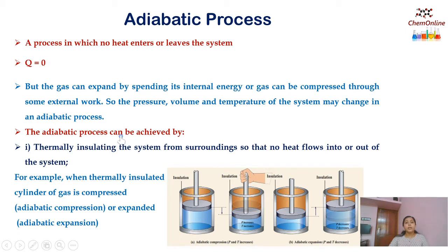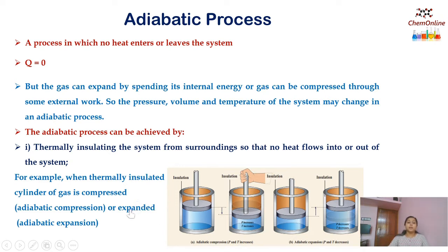We can achieve an adiabatic process by two conditions. The first way is by thermally insulating the system from the surroundings so that no heat flows into or out of the system. For example, when we keep a gas in a cylinder that is thermally insulated from the surroundings, then when the gas is compressed, that will be adiabatic compression, and when it is expanded, that will be adiabatic expansion. Since the cylinder is insulated from the surroundings, there will not be any heat exchange between the system and the surroundings.